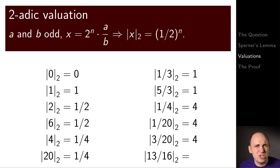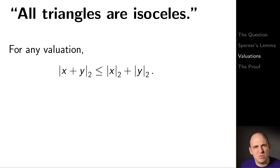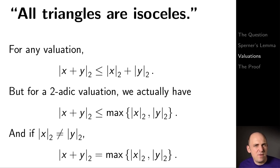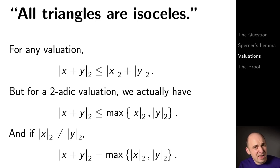With 2-adics, there's a key slogan: all triangles are isosceles. A valuation satisfies the triangle inequality: |x + y| ≤ |x| + |y|. But the 2-adic valuation satisfies something stronger — the ultrametric inequality: the 2-adic valuation of x + y is at most the maximum of the 2-adic valuations of x and y, with equality when the two valuations differ. So if the 2-adic valuations of x and y are the same, you get an isosceles triangle; if they differ, the third side x + y has 2-adic valuation equal to the maximum. Either way, it's isosceles.